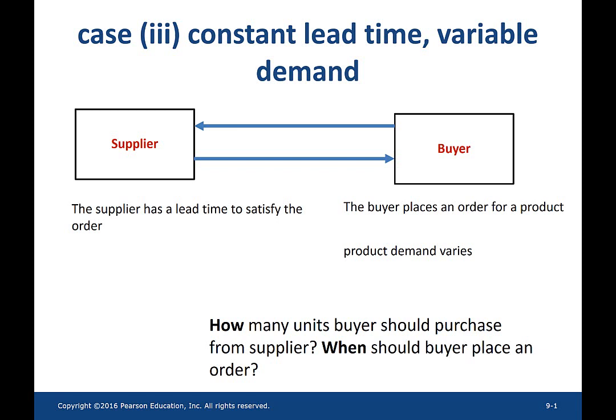In this video, I talk about buyer's decision making regarding how many units to buy and when to buy, under a situation where the supplier has a constant lead time and the buyer faces a variable demand — that is, the demand is not predictable.